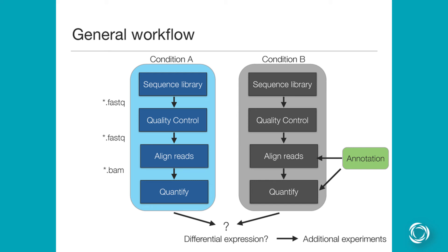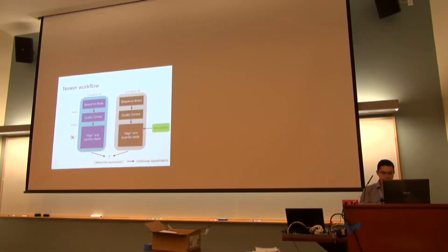And then you typically quantify somehow. So there's a number of different ways that you can quantify. I'll be going over the Callisto and Sleuth pipeline. And then after that you might ask if there's differential expression. And you might get some targets from that differential expression analysis. And then you should do some follow-up experiments. By the way, if you have any questions, please ask while I'm going through this.